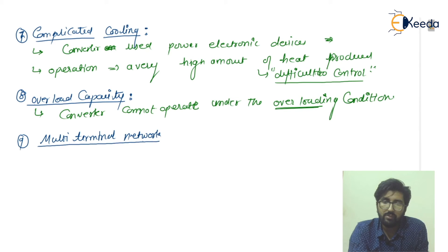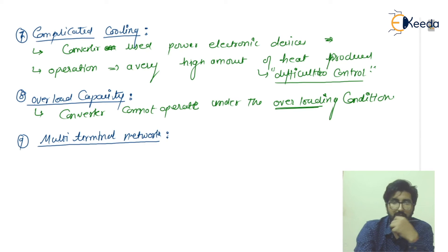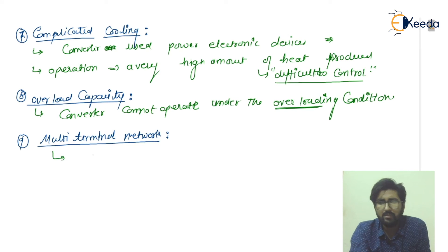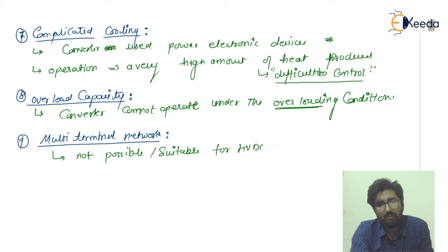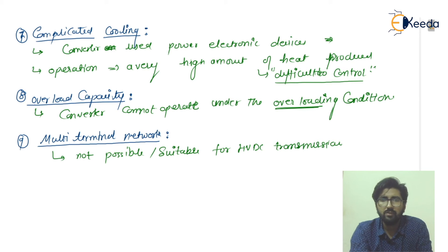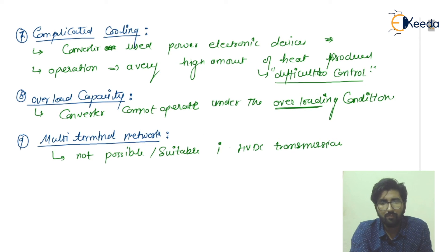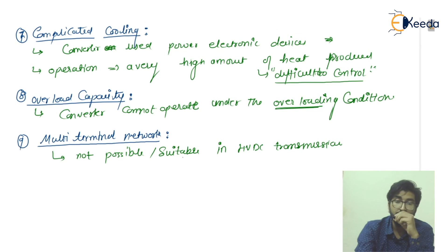Point number nine is multi-terminal network. In AC transmission, distribution and transmission in the form of a multi-terminal network is possible, but in HVDC transmission the multi-terminal network is not possible. Multi-terminal networks are not suitable for HVDC transmission.